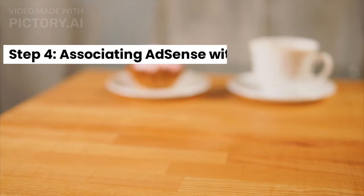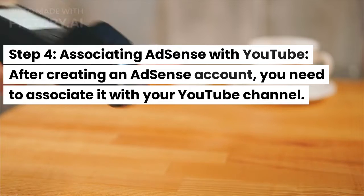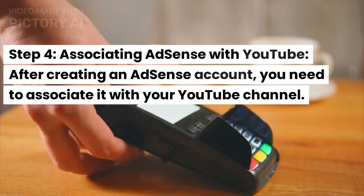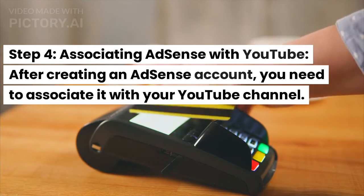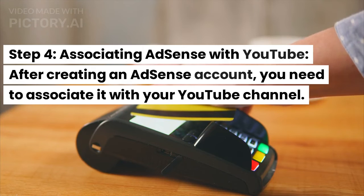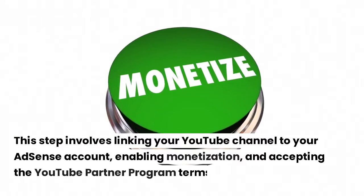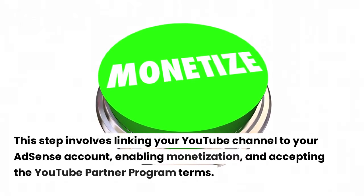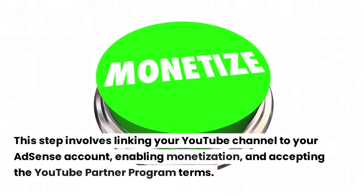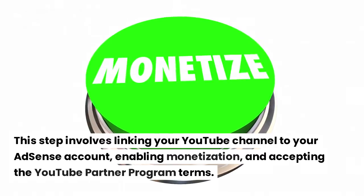Step 4: Associating AdSense with YouTube. After creating an AdSense account, you need to associate it with your YouTube channel. This step involves linking your YouTube channel to your AdSense account, enabling monetization, and accepting the YouTube Partner Program terms.